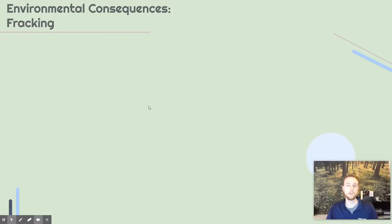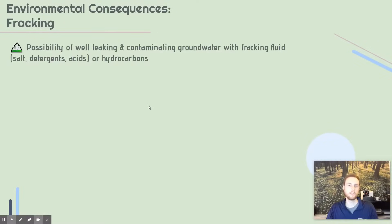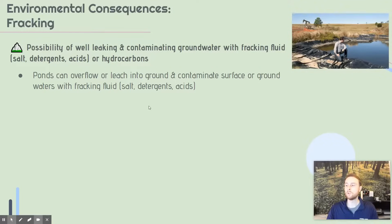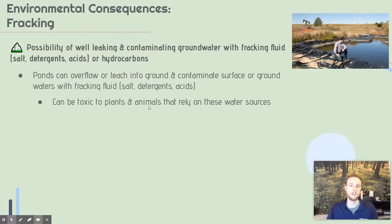Now we'll wrap up by talking about the environmental consequences of fracking. One is the possibility of the well leaking, releasing contaminated fracking fluid — which contains salt, detergent, acids, and the hydrocarbons in natural gas — into the groundwater. Another is that the ponds where fracking fluid is temporarily stored can also leak; it could rain hard and they could overflow into the surrounding area, contaminating nearby groundwater or surface water, which could be toxic to both plants and animals that rely on those water sources.